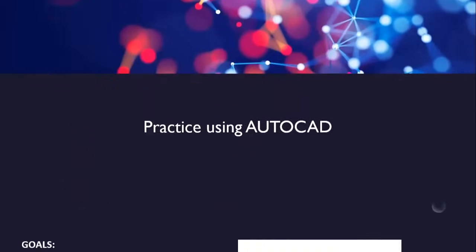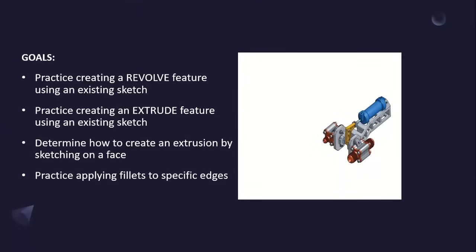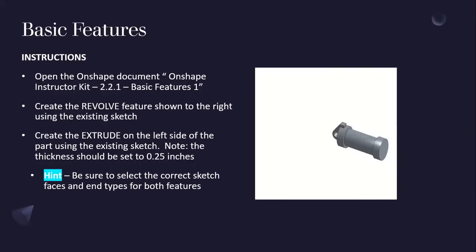Practice goals using AutoCAD include: creating a revolve feature using an existing sketch, creating an extrude feature using an existing sketch, determining how to create an extrusion by sketching on a face, and applying fillets to specific edges. Instructions: open the Onshape document 'Onshape Instructor Kit 2.2.1 Basic Features 1.' Create the revolve feature shown using the existing sketch. Create the extrude on the left side of the part using the existing sketch — note the thickness should be set to 0.25 inches. Be sure to select the correct sketch faces and end types for both features.